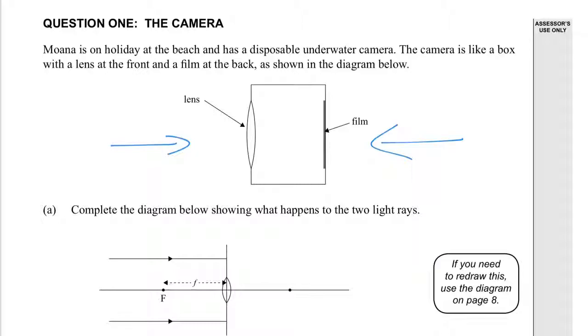Complete the diagram below showing what happens to the two light rays. So this is looking at fundamentals here, and you're trying to work out is it a converging or diverging lens. You've hopefully memorized, and if not you've learned from the fundamentals how the light will refract. But this is a converging lens, so it's going to go through the focal point with arrows on the diagram.